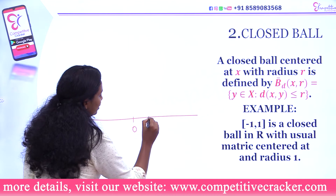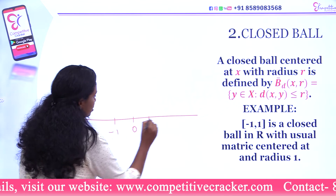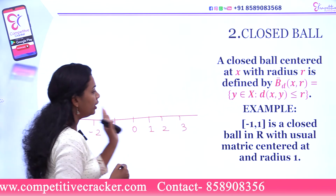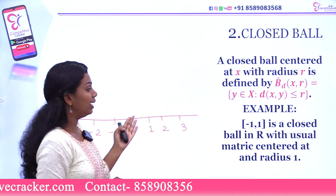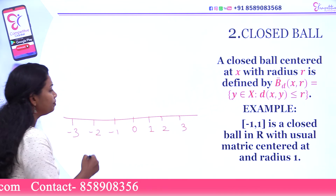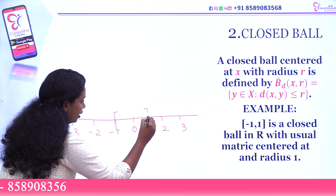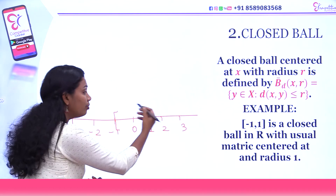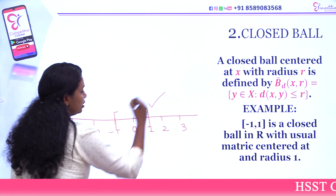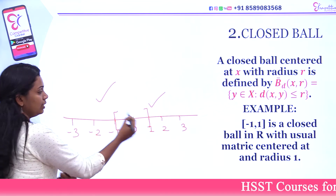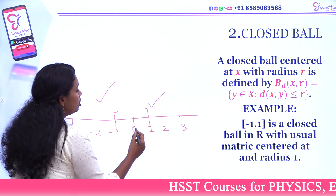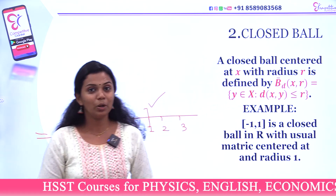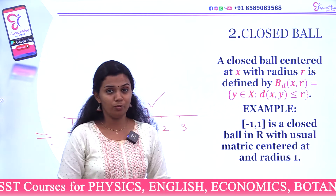One example: the closed interval [-1, 1] is a closed ball in ℝ with the usual metric. Consider the real line with usual metric. Here, -1 and 1 are both included, and the distance from 0 to 1 is 1, which is included. So closed interval [-1, 1] is a closed ball in ℝ with usual metric. So that is open ball and closed ball.